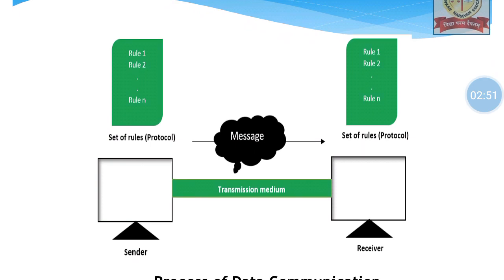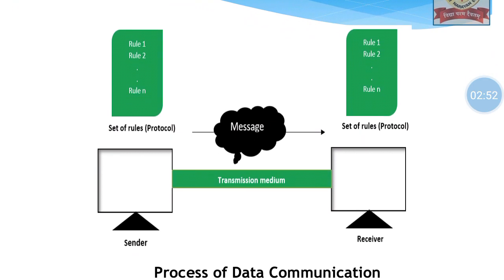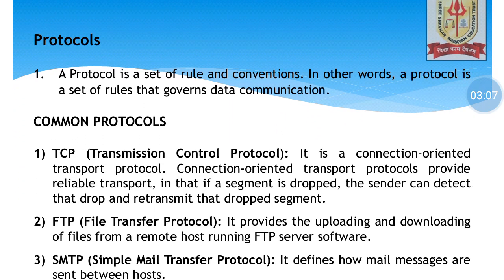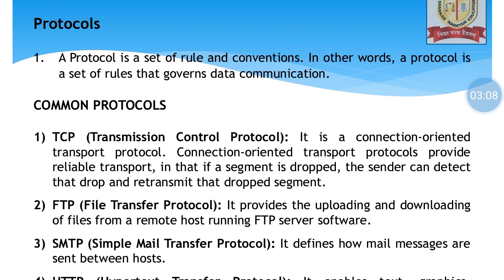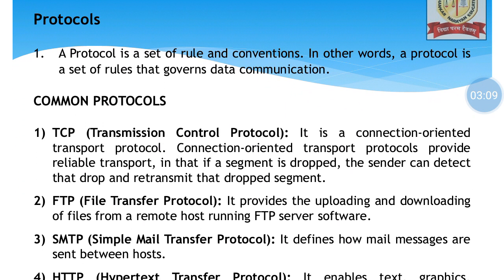This is a diagram for data communication. We have sender, receiver, message, transmission medium, and apart from that, we have protocols, which are nothing but a set of rules that need to be followed by both sender and receiver. So protocols is nothing but a set of rules.